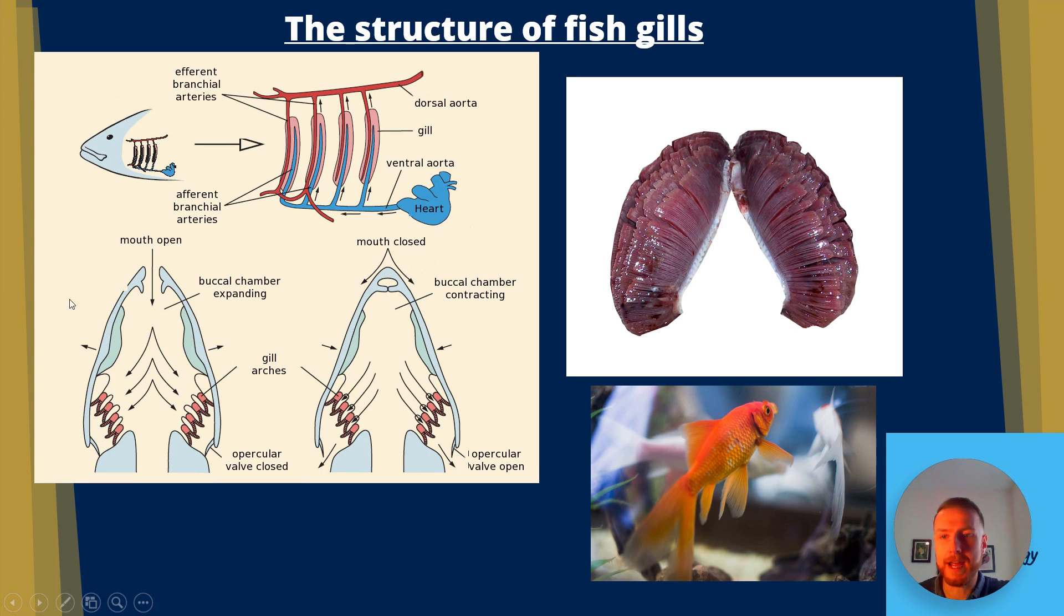Now this diagram here on the left will show when the mouth is open water will move into the buccal chamber and it will flow over the gill arches over the filaments and that oxygenated water is going to move over those filaments we can see. Water is going to go in through the mouth and out through the gills.